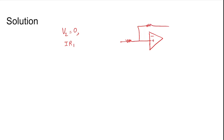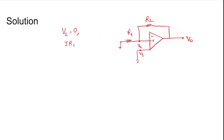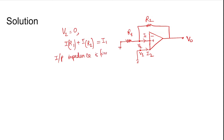Drawing the circuit again: we have R1, R2, with V2 and V1 labeled. V1 is grounded, so V2 is also grounded. Defining I1 and I2, by KCL: I_R1 plus I_R2 equals I1. Since input impedance is finite, I1 is not equal to zero, and therefore I1 exists.